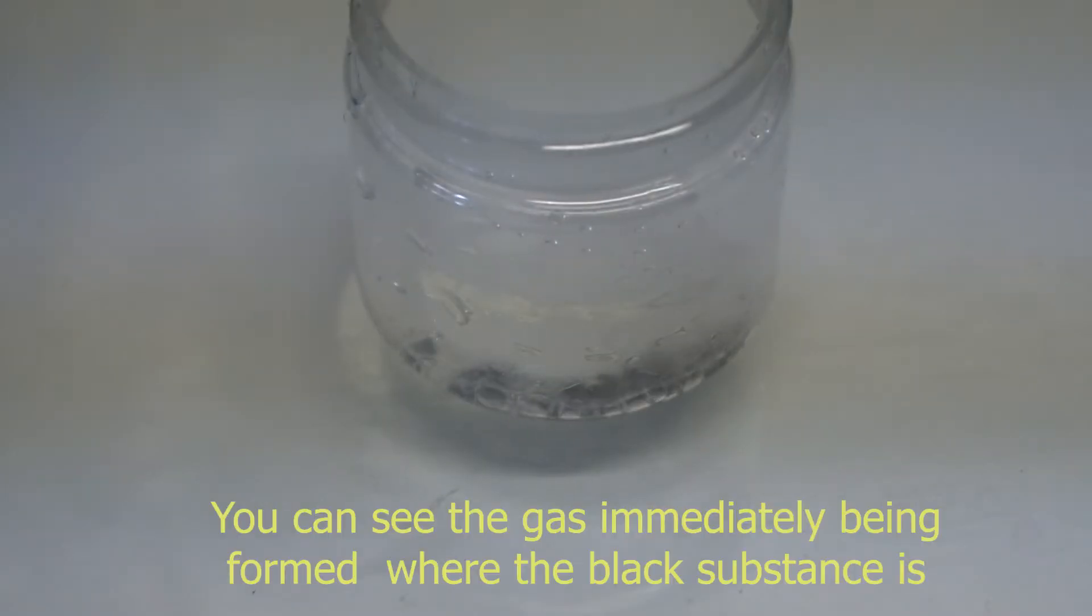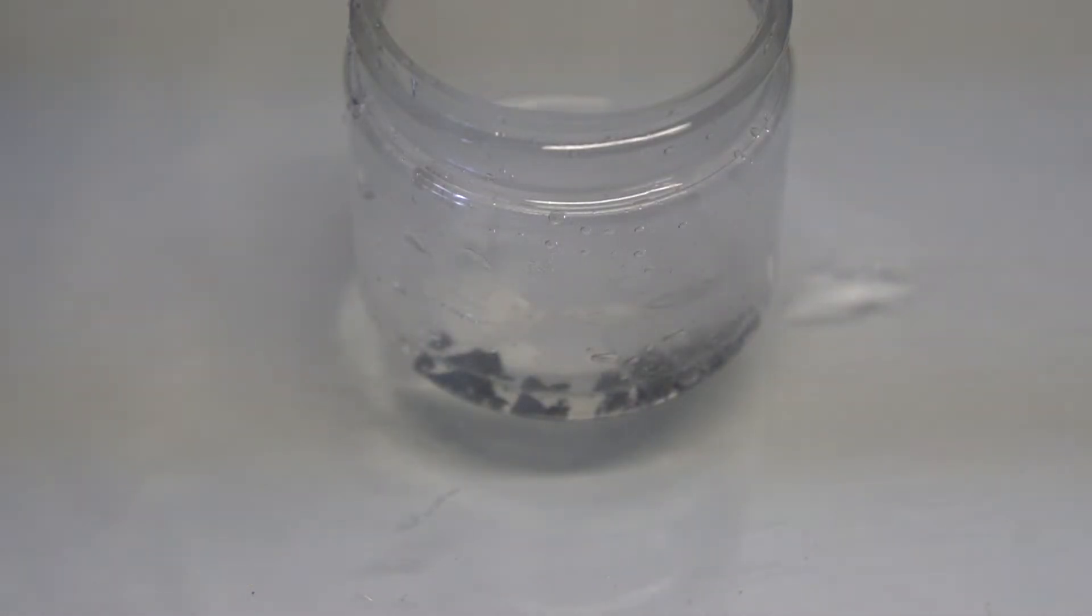Sure enough, when we added hydrochloric acid, rapid bubbling of a gas immediately started. This meant the substance was most likely elemental zinc, and now we had zinc chloride.